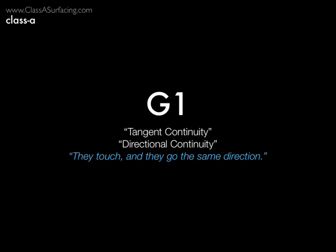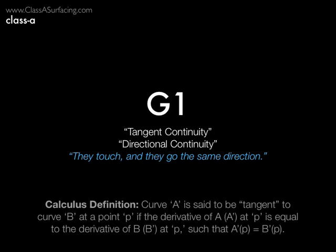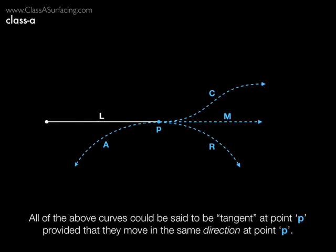G1 takes that one step further. With G1 continuity, the curves not only touch, but they go in the same direction at the point where they touch — we usually call that tangency. In calculus, this means that the first derivative of the two curves is equal at the point where they touch, hence the name G1, as in G first degree equivalence. Curve L is said to have G1 continuity with curve M, but these points are not just tangent — they're actually collinear.